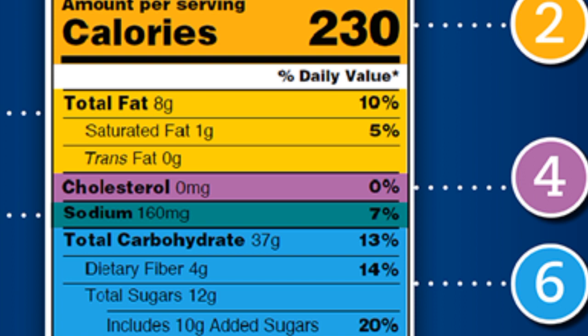Total carbohydrates consist of dietary fiber and total sugars. With this, you'll be able to determine the amount of added sugar or natural sugar in that product.